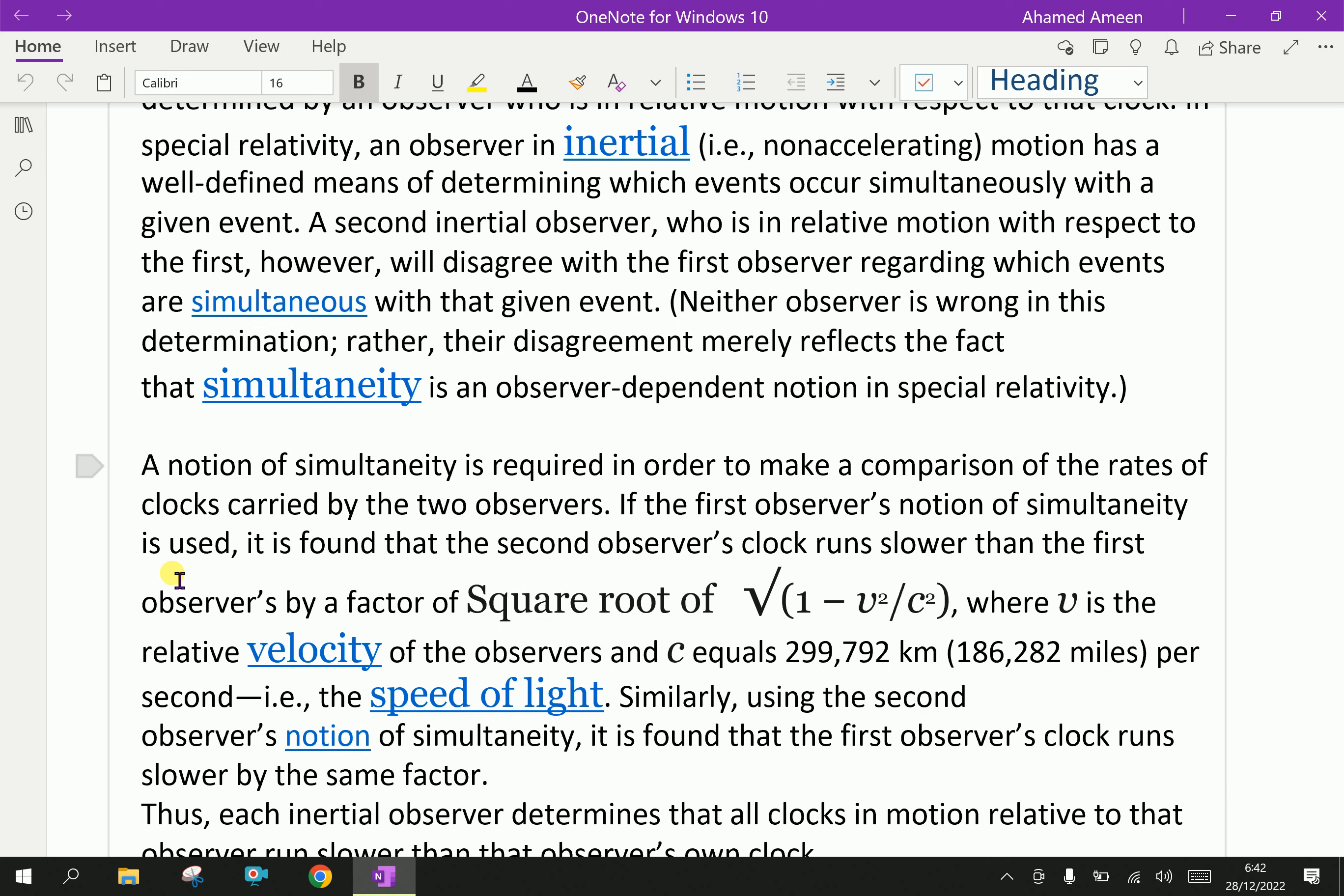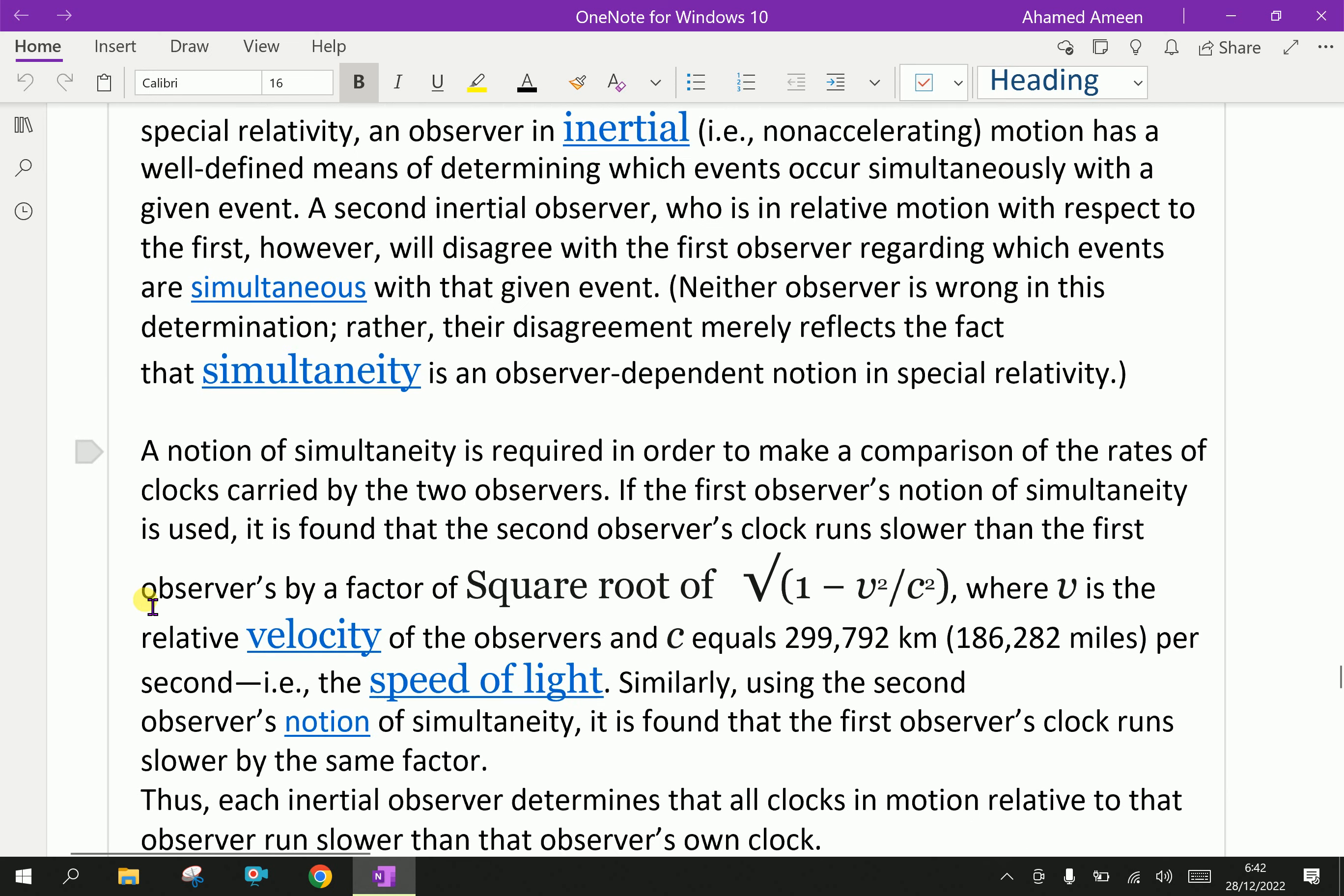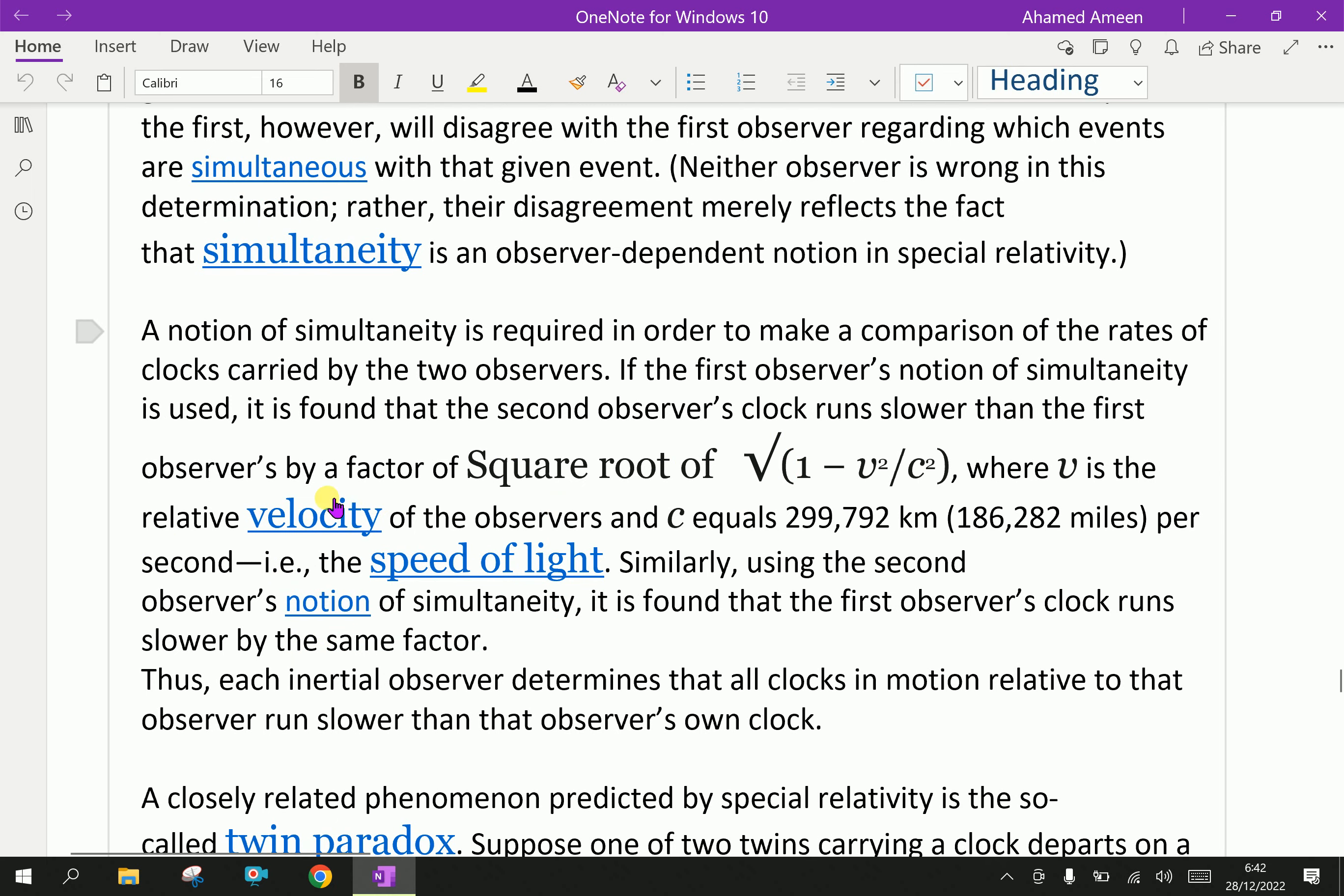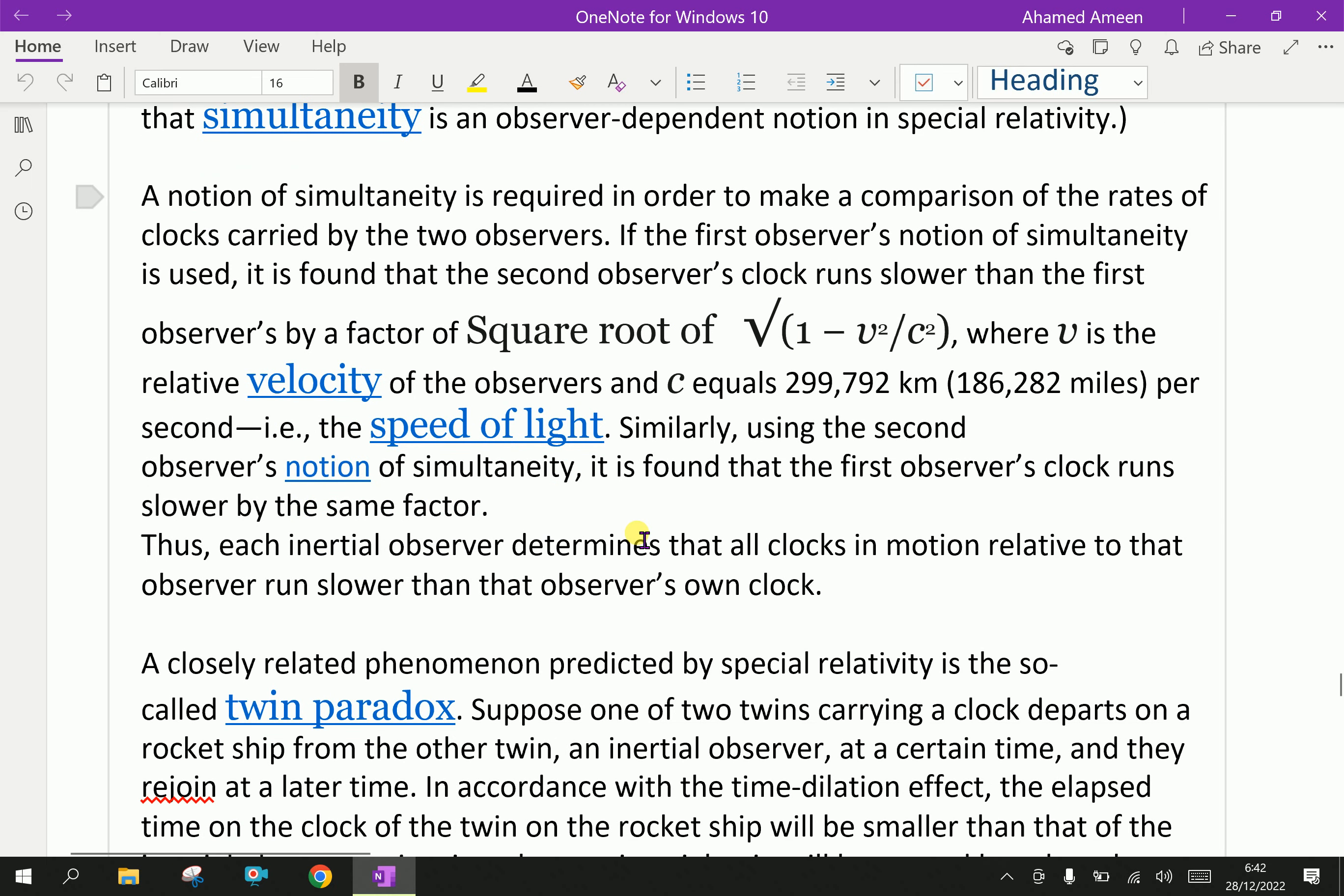When witnessed from the ground, the events that mark the beginning and end of the time interval occur at different places. And in consequence, the duration of the interval appears longer than the proper time. This effect is called time dilation. That means dilate is to become larger.